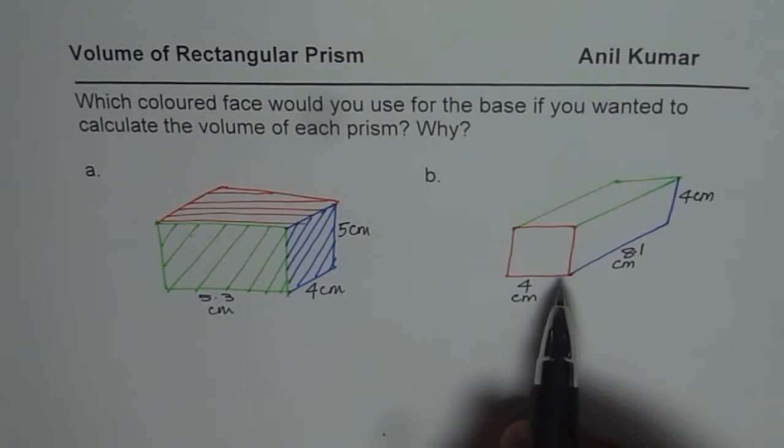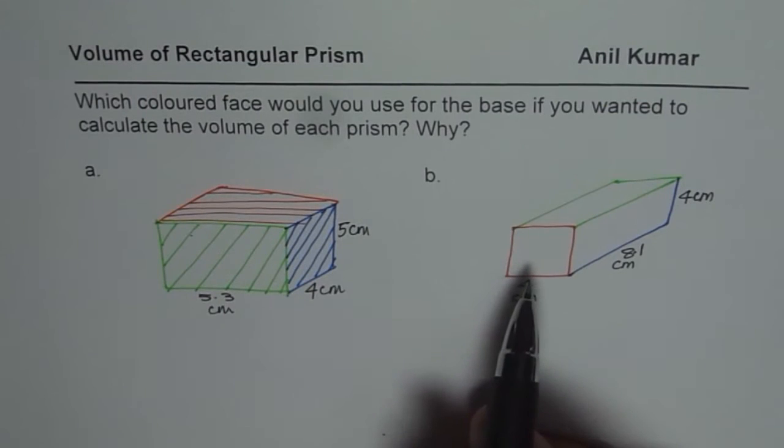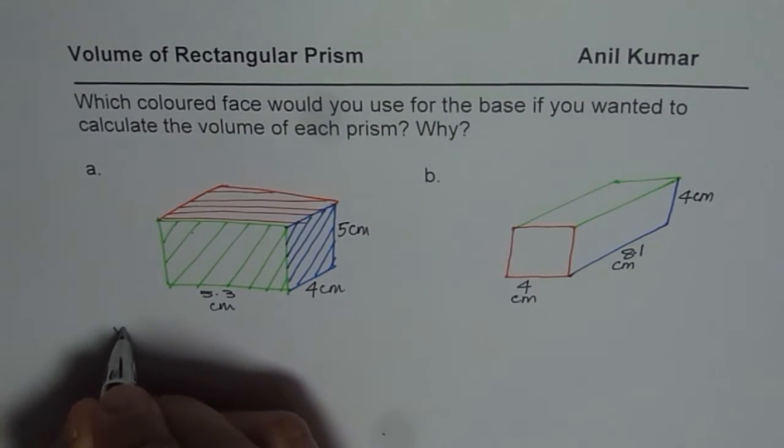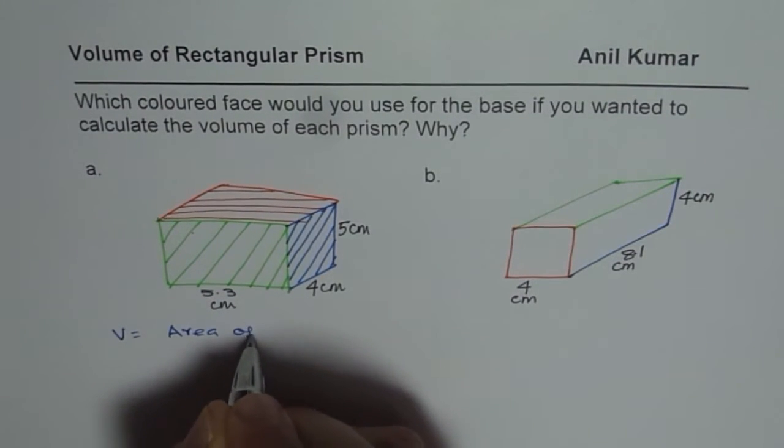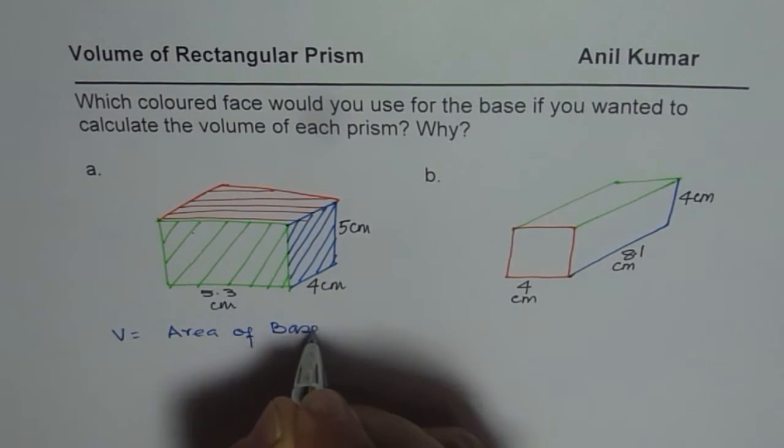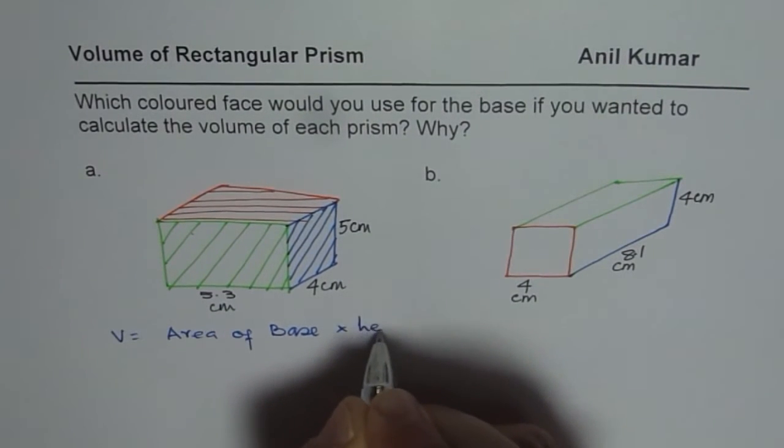We have two different prisms here, both are rectangular prisms. We need to find the volume of these two prisms and you know, what is volume? Volume is area of base times height.